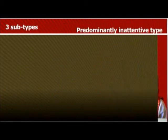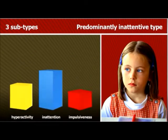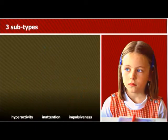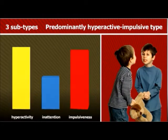The predominantly inattentive type has attention-related impediments and therefore often comes across as unmotivated and passive. The predominantly hyperactive-impulsive type, on the other hand, is often restless and reacts impulsively.